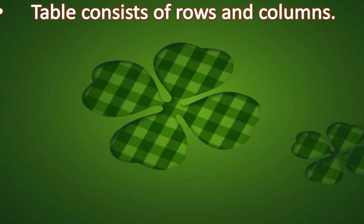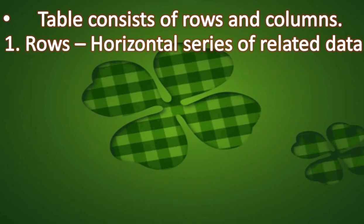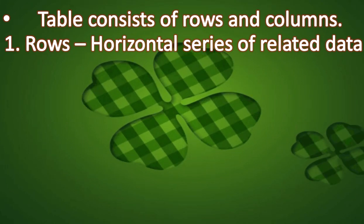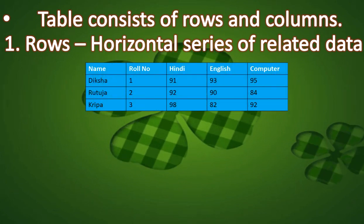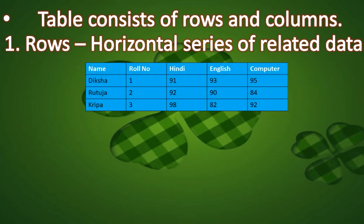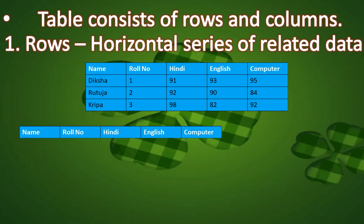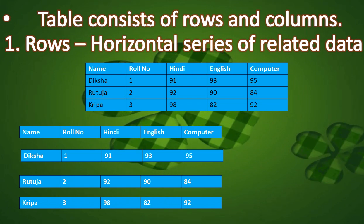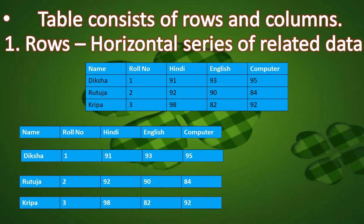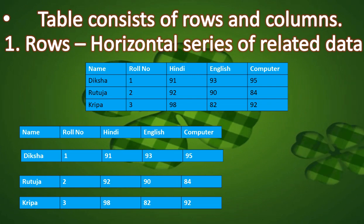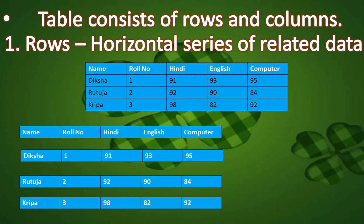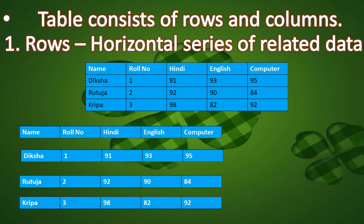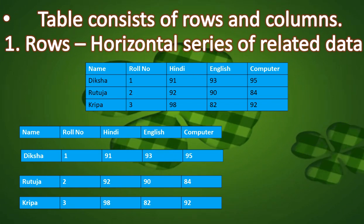Next we will see what a row is. A row is a horizontal series of related data — column is vertical, row is horizontal. In this table we can see: this is the first row, second row, third row, and fourth row.